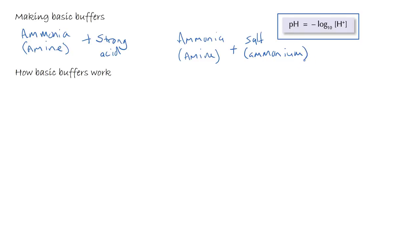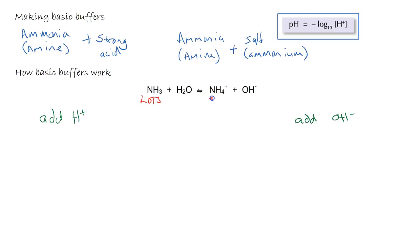We will look at those once we've been through how a basic buffer works. Using ammonia as our example: if we were using just ammonia, we would have lots of ammonia and small amounts of NH₄⁺ and small amounts of OH⁻. However, because we are going to be making a buffer, we are actually going to use lots of the ammonium salt. The ammonium is created either by the addition of the actual ammonium salt to the ammonia solution, or by reacting with the strong acid to make the ammonium salt.